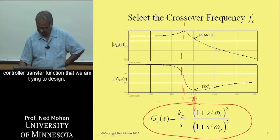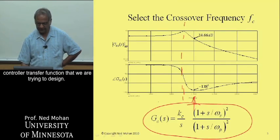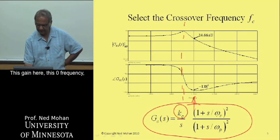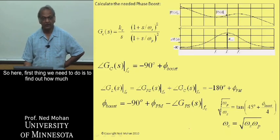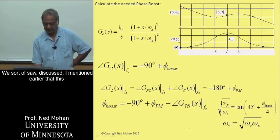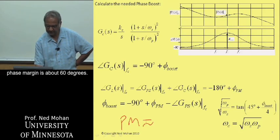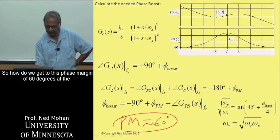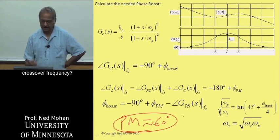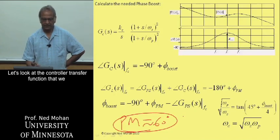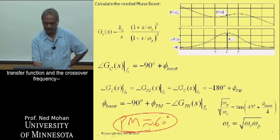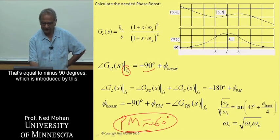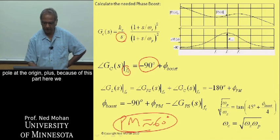To remind ourselves, this is the controller transfer function we are trying to design, where we have three unknowns: the gain, the zero frequency, and the pole frequency. The first thing we need to do is find out how much phase boost is needed. With a desired phase margin of about 60 degrees, the phase angle of the controller transfer function at the crossover frequency equals minus 90 degrees — introduced by the pole at the origin — plus the phase boost from the zero-pole pairs.